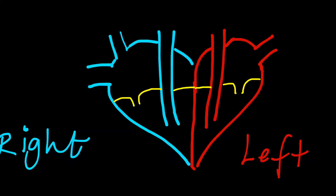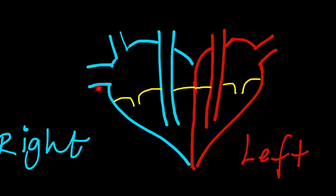Since our drawing is inverted relative to the heart within the body, the actual left appears on the right of our drawing and the actual right of the heart appears on the left of the drawing — similar to a mirror. The red portion represents the flow of oxygenated blood and the blue represents deoxygenated blood flow. The heart has four chambers: the upper chambers are called the atria and the lower chambers are called the ventricles.